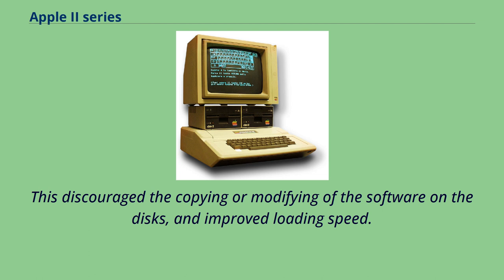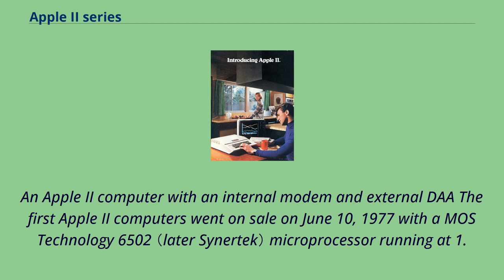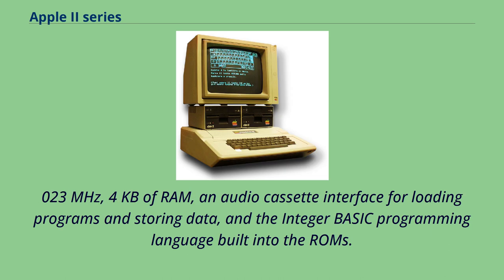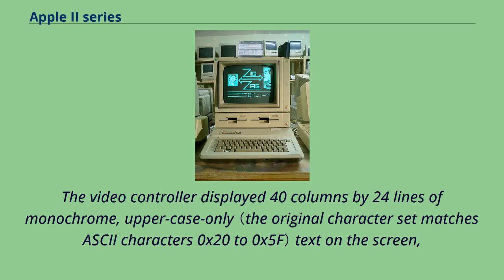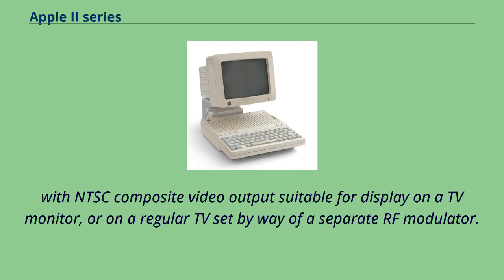The first Apple II computers went on sale on June 10, 1977, with a MOS Technology 6502 microprocessor running at 1.023 MHz, 4KB of RAM, an audio cassette interface for loading programs and storing data, and the Integer Basic programming language built into the ROMs. The video controller displayed 40 columns by 24 lines of monochrome, uppercase-only text, with NTSC composite video output suitable for display on a TV monitor or regular TV set by way of a separate RF modulator.